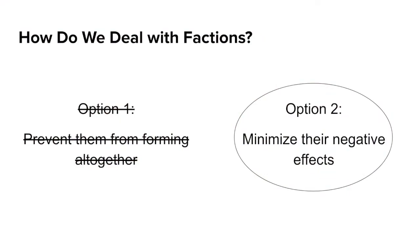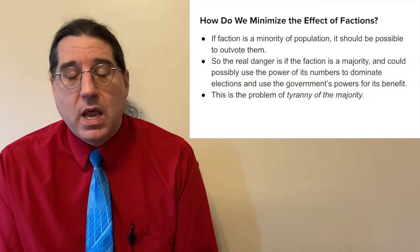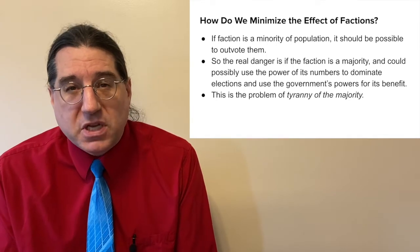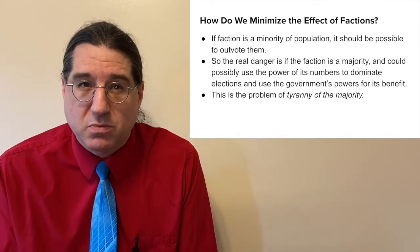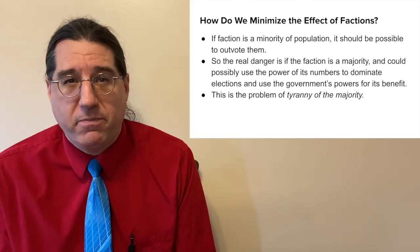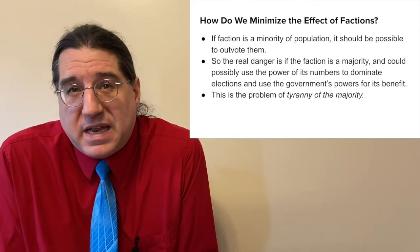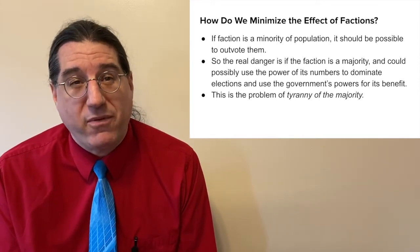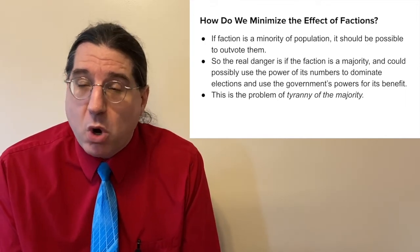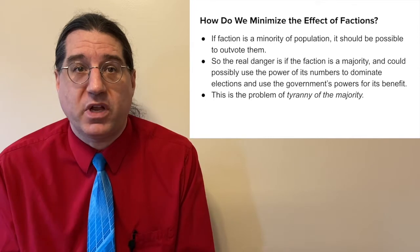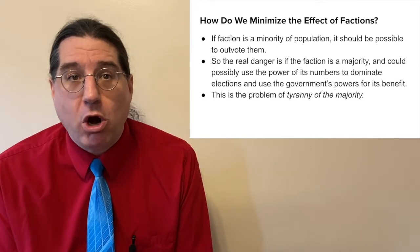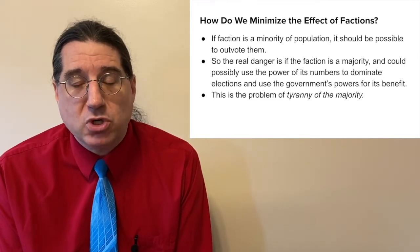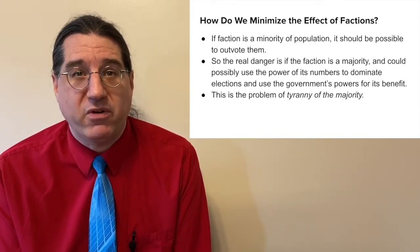Madison turns to this solution and tries to figure out how to make it work. He thinks the solution will depend on the size of the faction posing the threat. If the faction is a minority of the population, the electoral system should be able to deal with it — just outvote the faction so it never gets the power to do its dastardly deeds. But if the faction is a majority of the population, we have a problem. The faction should be able to win most elections and take control of the government's power. This is Madison's great fear: that a majority could use the power of numbers to trample on the rights of a minority group. This tyranny of the majority is the greatest danger to a democratic or republican form of government.